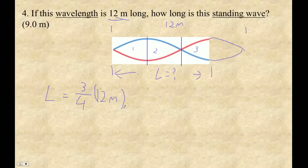So let's see, three quarters of 12. Well, one quarter of 12 is three, and three quarters of 12 would be nine meters.